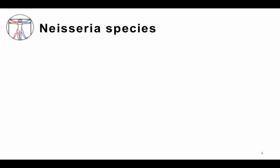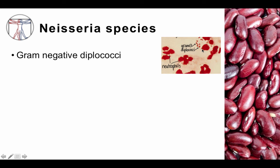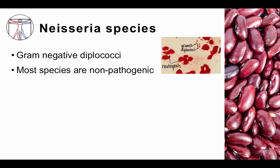Neisseria species are gram-negative diplococci. They are very small kidney bean shaped organisms. They are gram-negative, they stay red, and you can see them adjacent to neutrophils and see how much smaller they are. They are very unique in terms of their morphology and can usually be relatively easily identified.